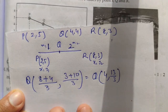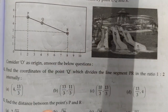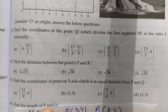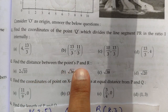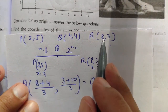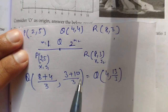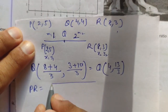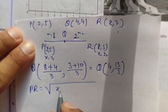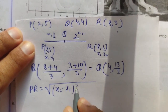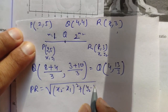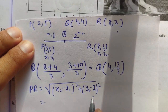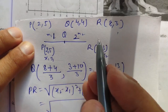Next question: find the distance between P and R. Using the distance formula: PR = √[(x2 − x1)² + (y2 − y1)²].